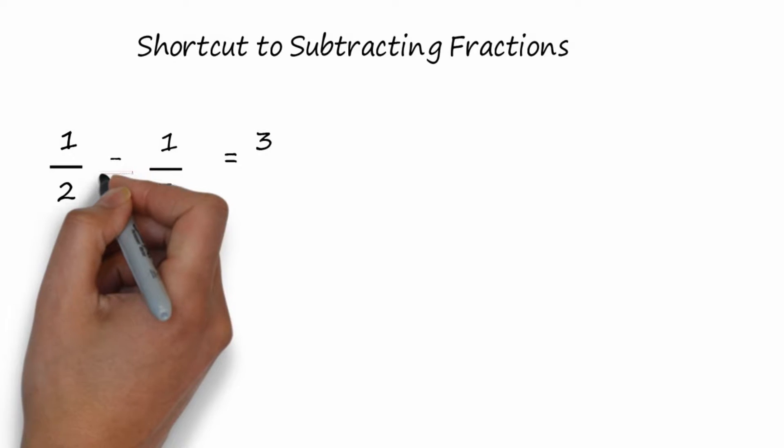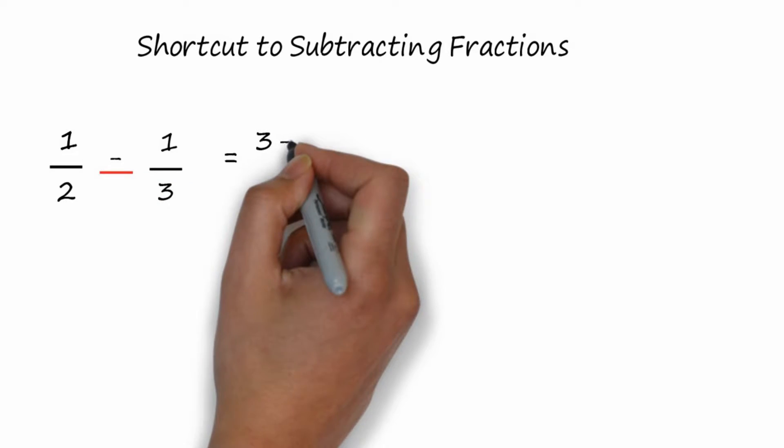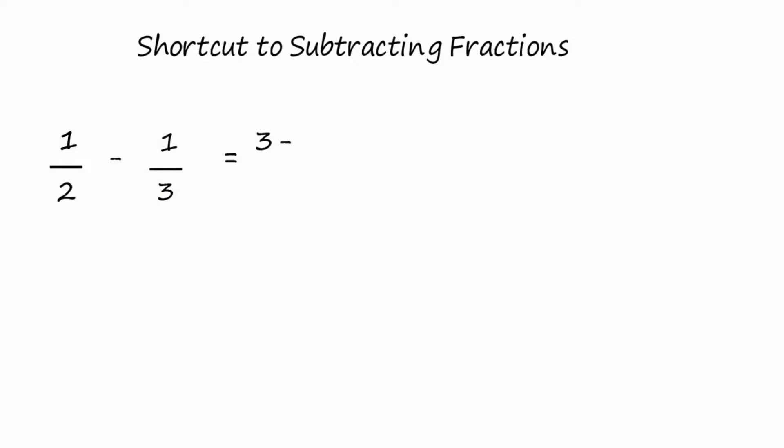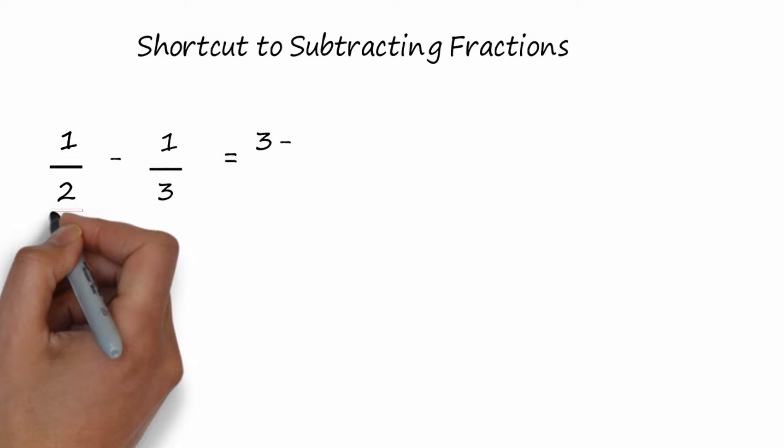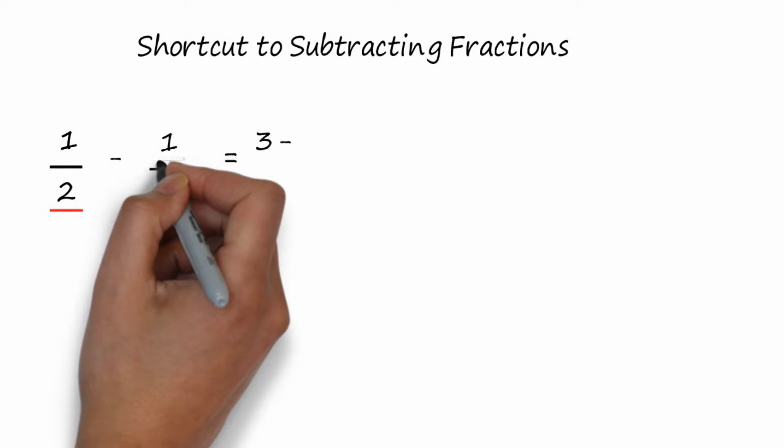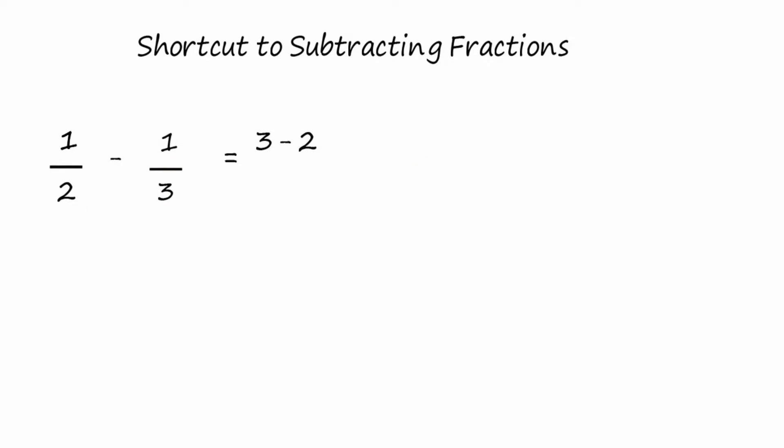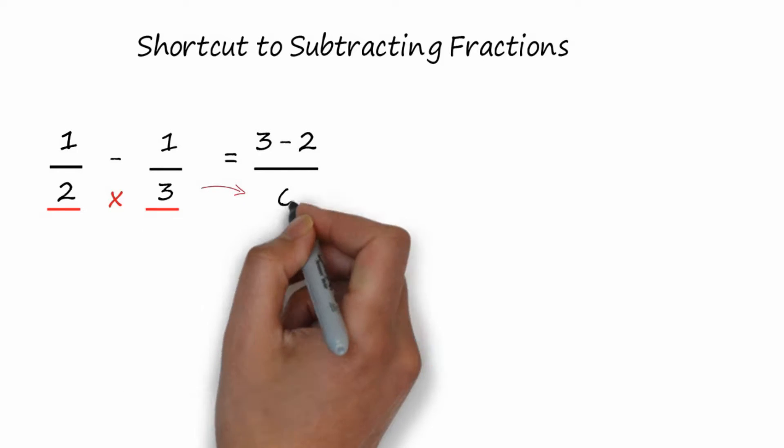Now, whatever sign you have, plus or minus, bring that over to your numerator. In this case, we're subtracting, so it's minus. Now, go to the lower left-hand corner, multiply the upper right-hand corner, and put that in the numerator. Two times one is two. All of this is going to be over, multiply your two denominators together, two times three is six.